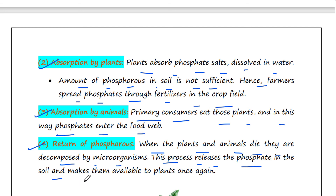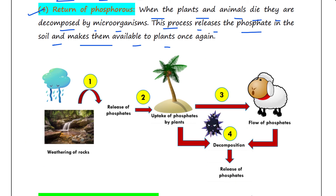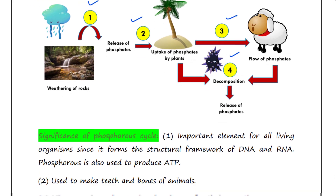This makes phosphorus available to plants once again. Here you can see the schematic — all four stages are drawn: one, two, three, and four — which I have already talked about.